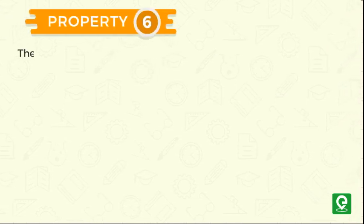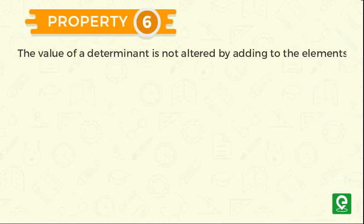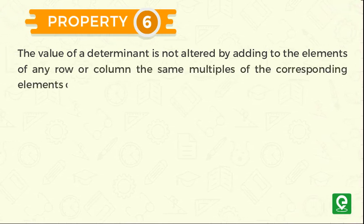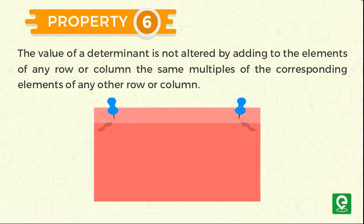Property 6: The value of a determinant is not altered by adding to the elements of any row or column the same multiples of the corresponding elements of any other row or column. For example,